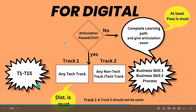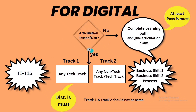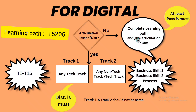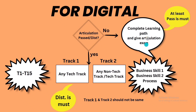For digital, first you have to check whether you have cleared articulation or not. If you have not cleared articulation or have a password restriction, you have to complete the learning path and give an articulation example. In the survey form, you have to select that you wish to appear for the articulation — select that from the dropdown.